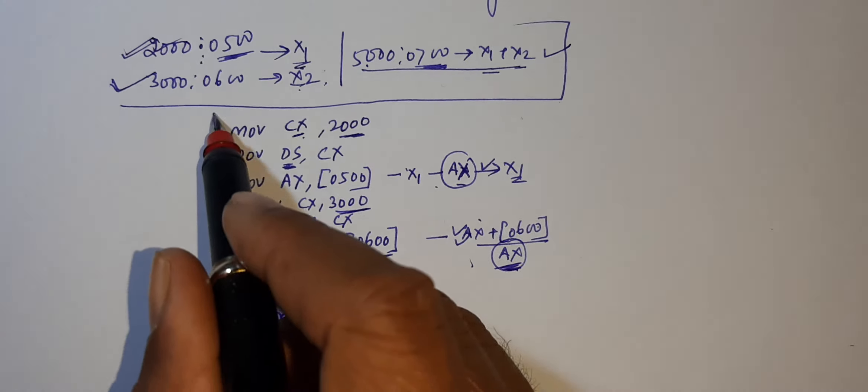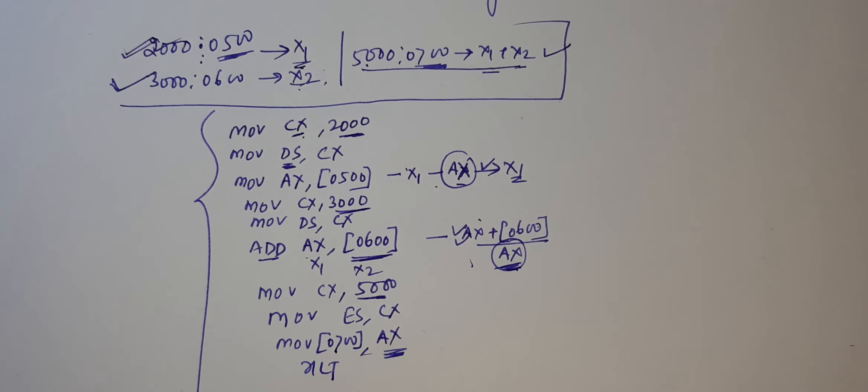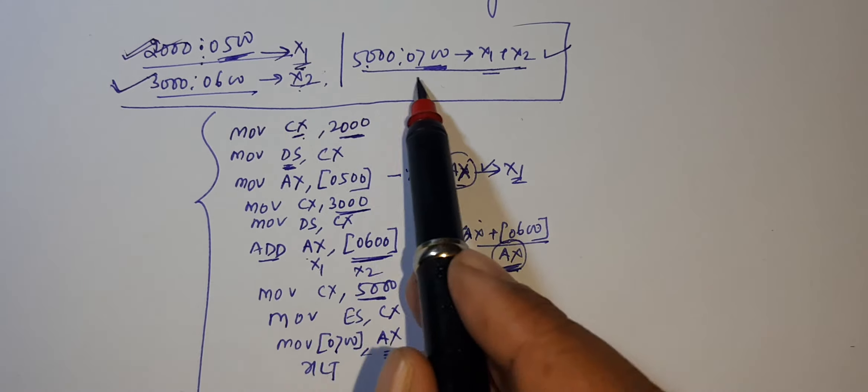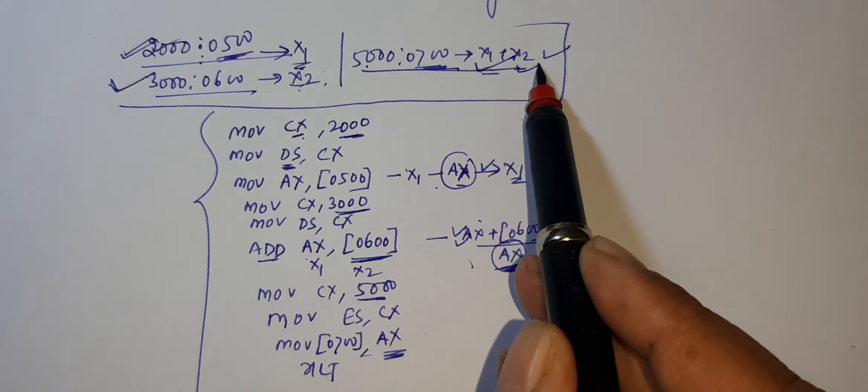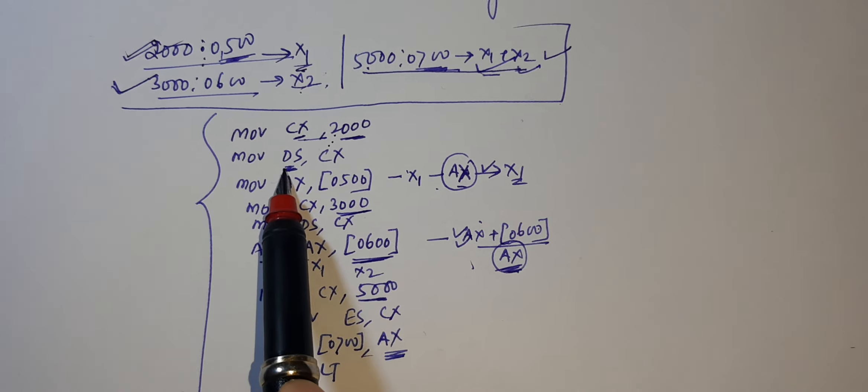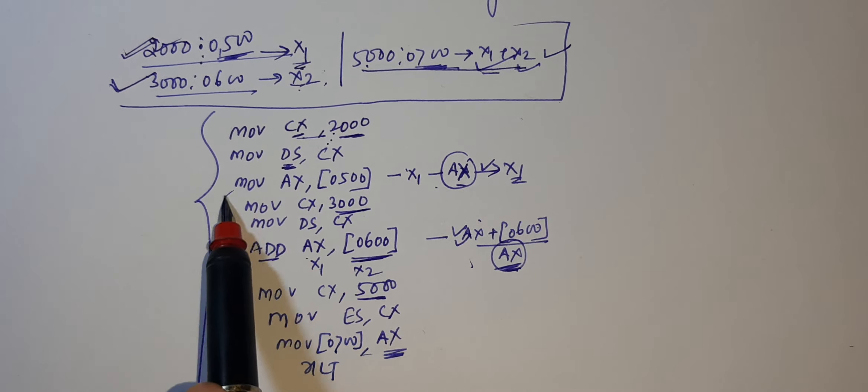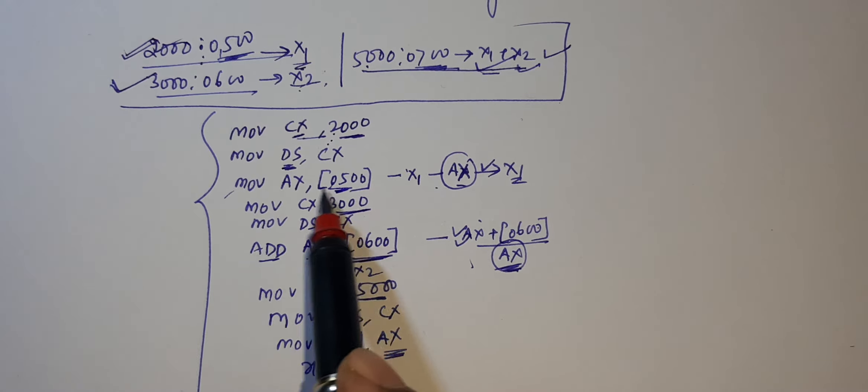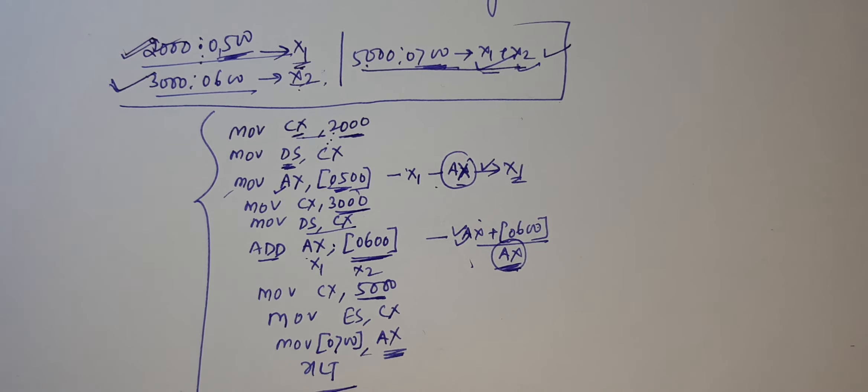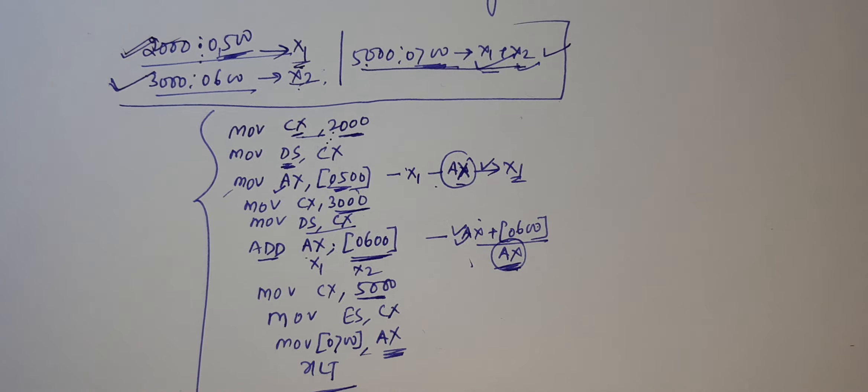And halt. This is a simple program using which you can add and store. First of all, we have to point this location, then we have to insert one segment, then we have to point and add and store. This is a very simple program to add two segments and store output at third segment. Thank you.